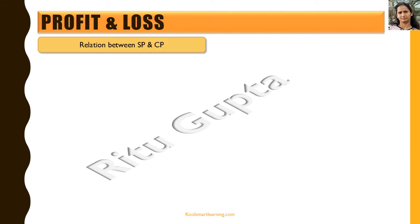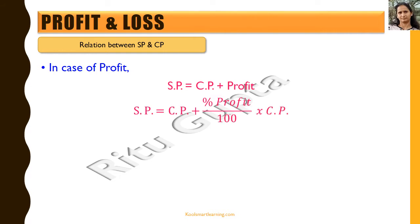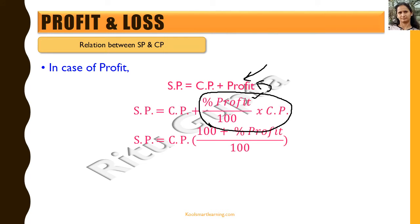Now let's see the relation between selling price and cost price in case of profit. Selling price is always more than cost price, so: SP = CP + Profit. If we replace profit with its percentage expression, SP = CP + (Profit% / 100) × CP. Taking CP common, we get: SP = CP × (100 + Profit%) / 100.